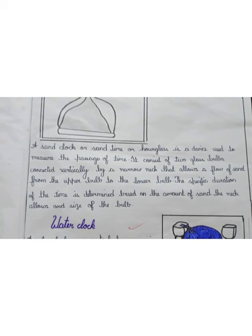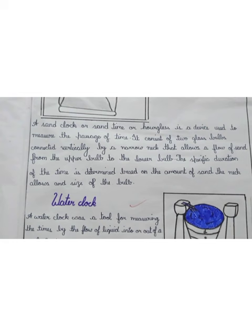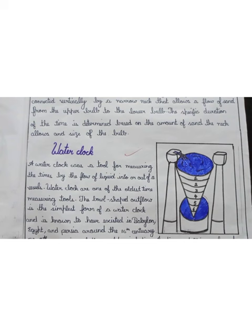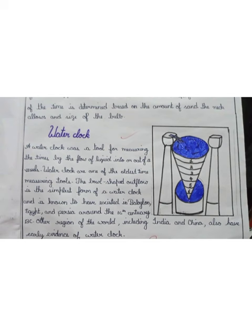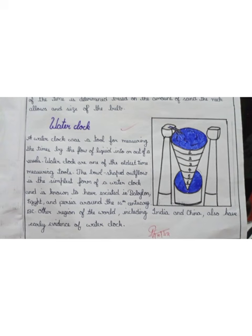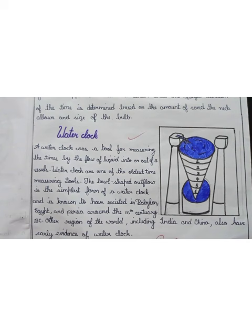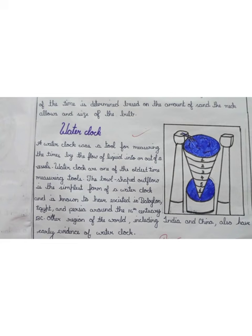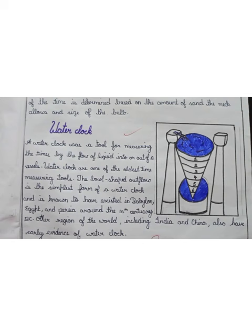The next device is the water clock. Here is the picture of a water clock. A water clock was a tool for measuring time by the flow of liquid into or out of a vessel. Water clocks are one of the oldest time measuring tools. The bowl-shaped outflow is the simplest form of water clock and is known to have existed in Babylon, Egypt, and Persia around the 16th century BC. Other regions of the world including India and China also have early devices of the water clock.